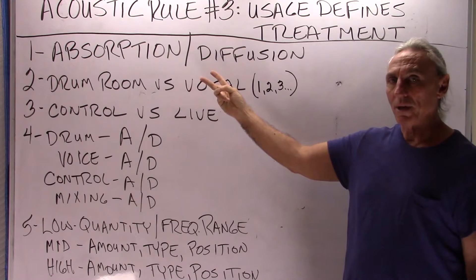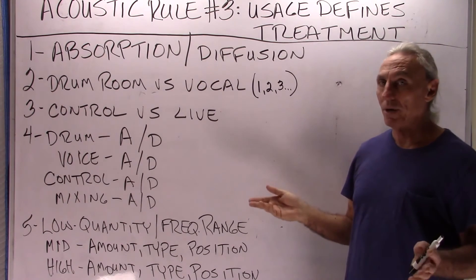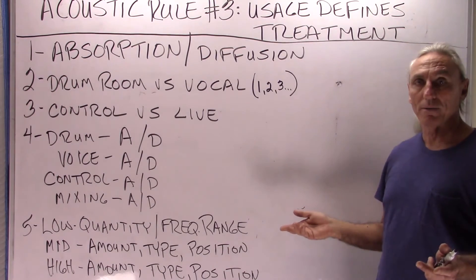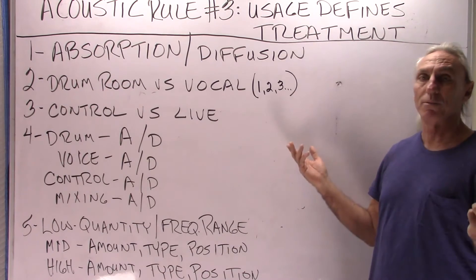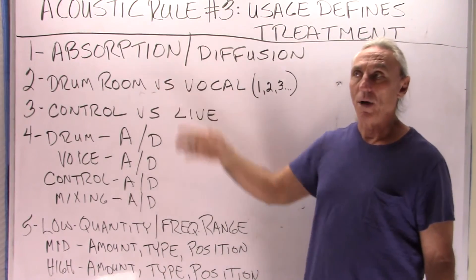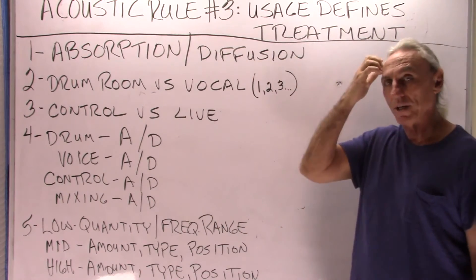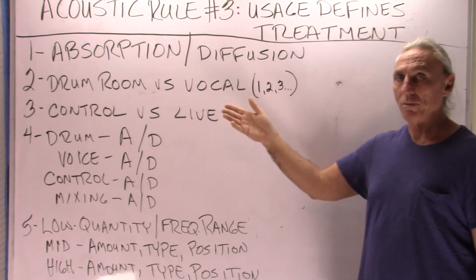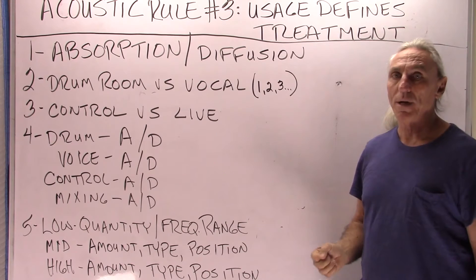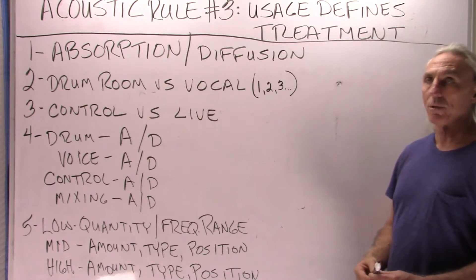We have two technologies that we can use: absorption and diffusion. That's it — there are no others. It doesn't matter what name a company calls their products, even our names: diaphragmatic absorption is an absorption process; quadratic diffusion is a diffusion process. Those are the only two we have. There are combinations of those, but they are still the two main acoustical tools that we have to work with.